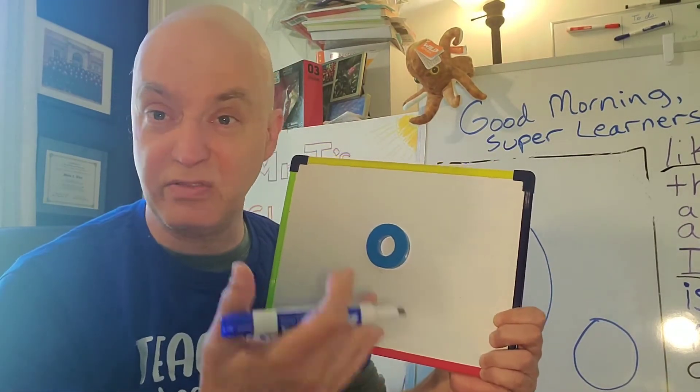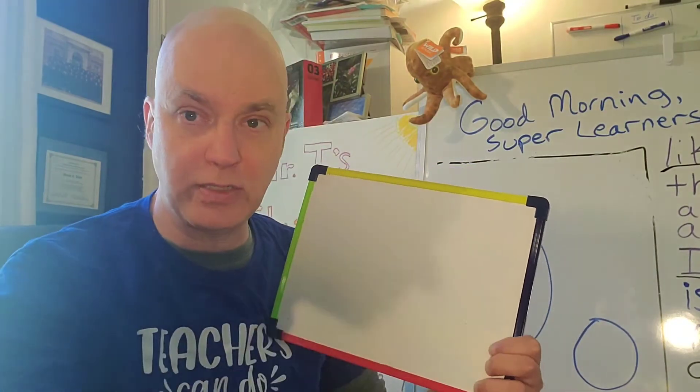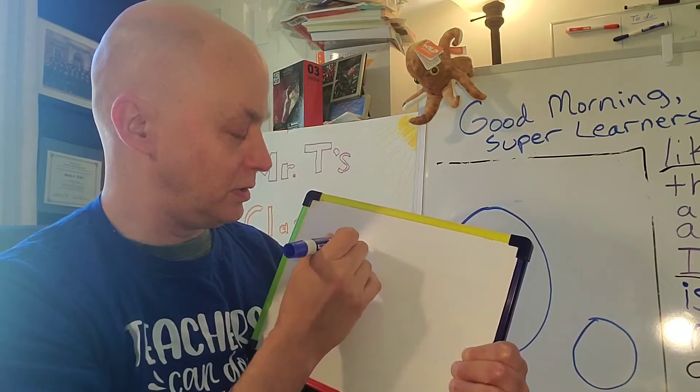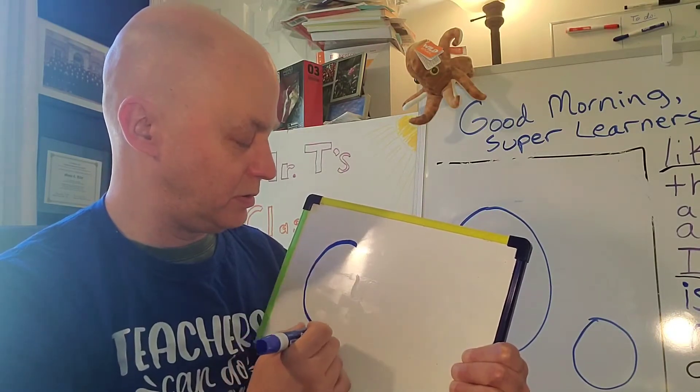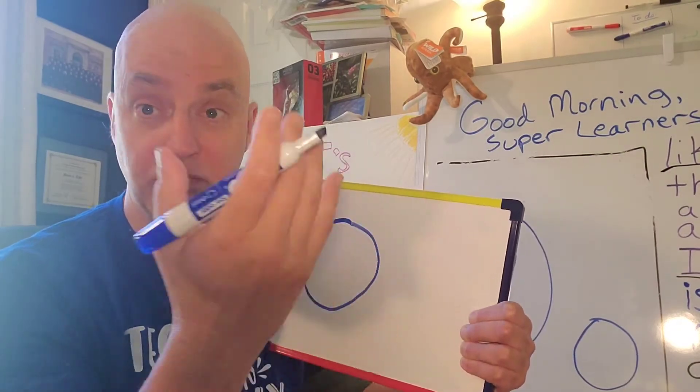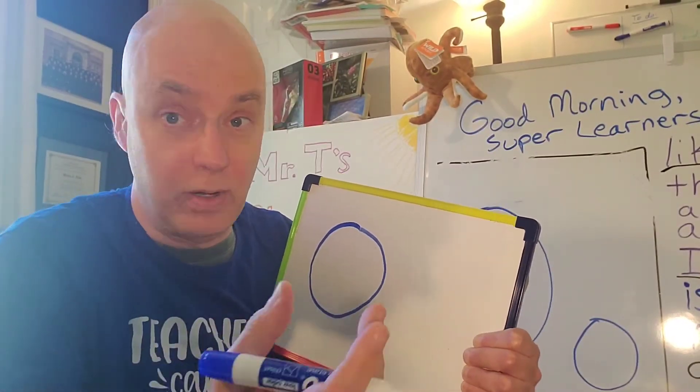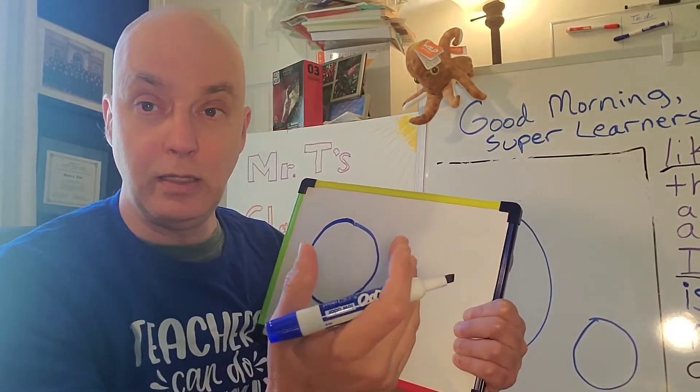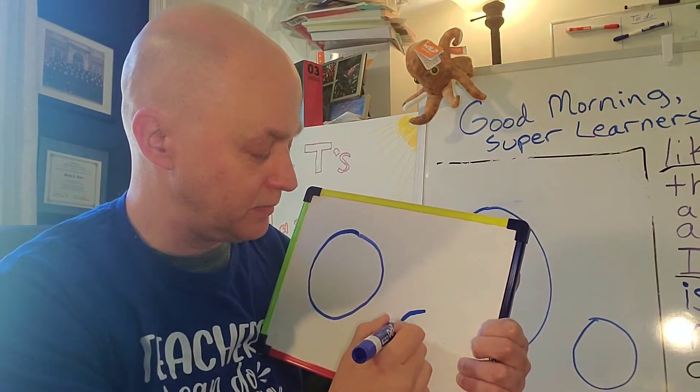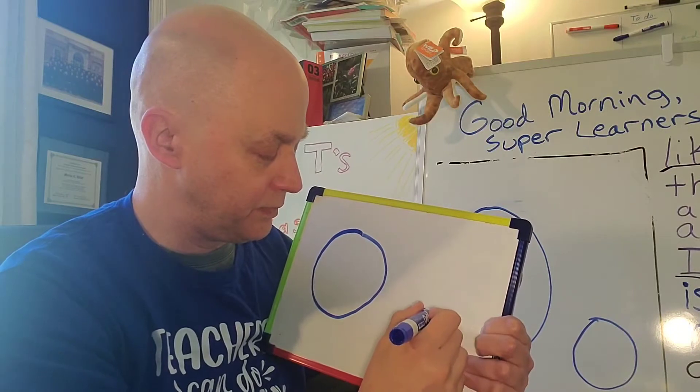But O is one of the easiest and funnest letters to write. So let's practice writing it real quick. It's just one big circle. So there's a capital O or a big O, and I'm sure you can draw it better than I can. And then a little O or a lowercase O, just like this.